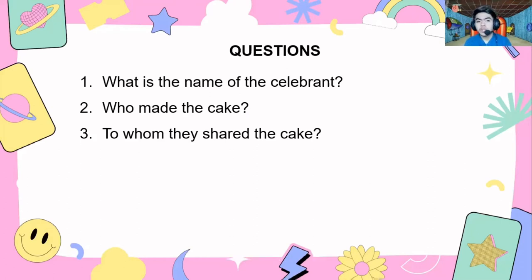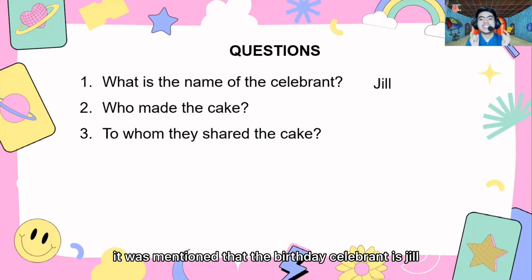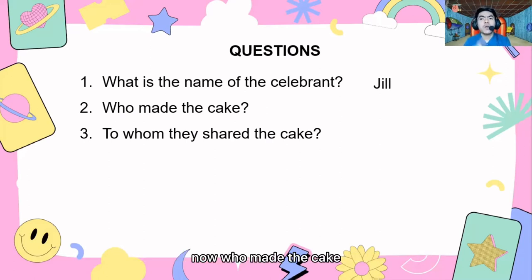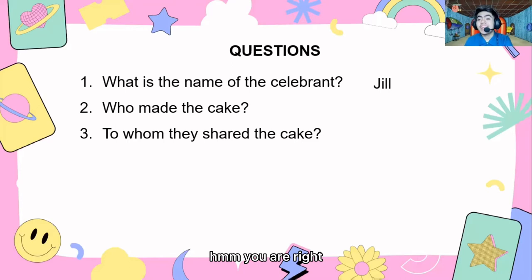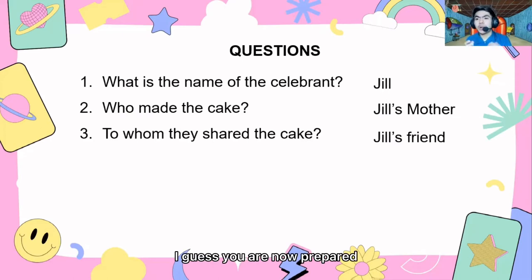On our first question: What is the name of the celebrant? The answer is Jill, since it was mentioned that the birthday celebrant is Jill. Next, who made the cake? You are right — it is Jill's mother. And to whom was the cake shared? You are right — it is Jill's friends.